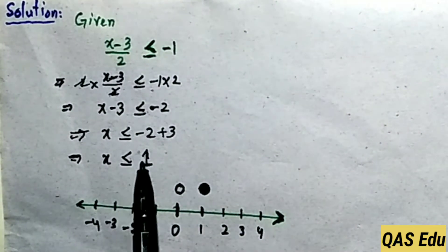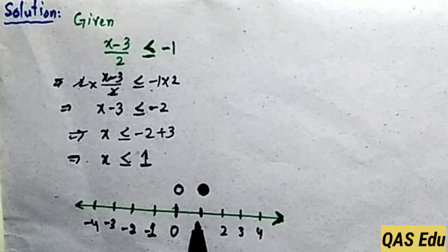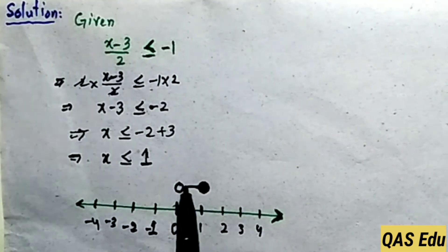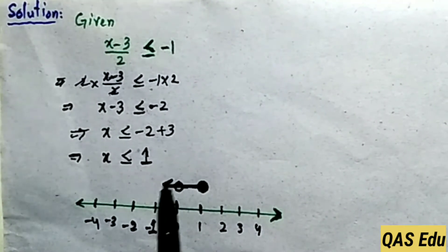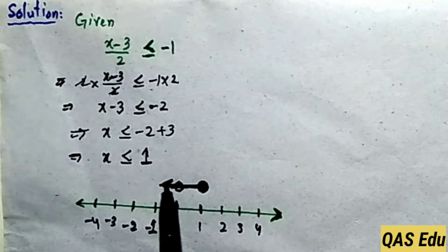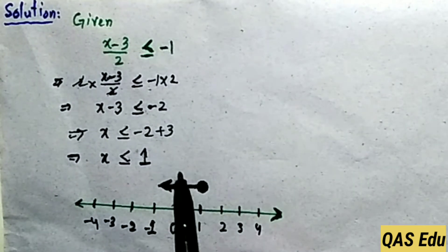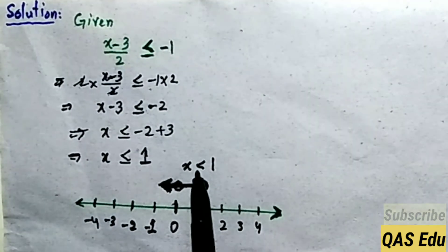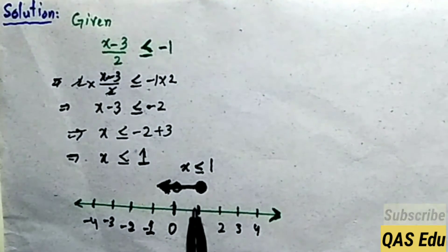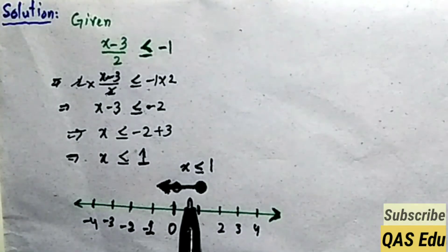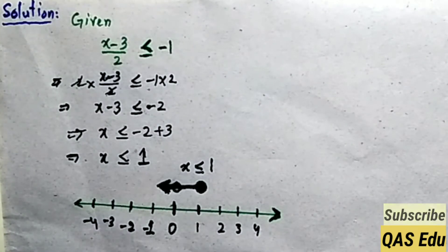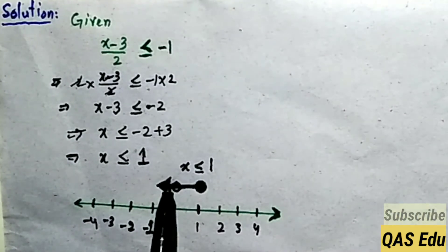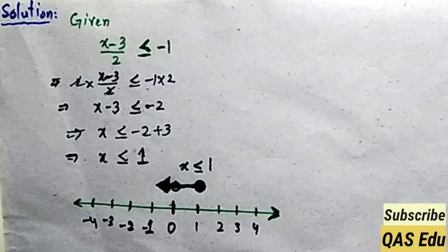x is less than 1, so values less than 1 go to the left: 0, minus 1, minus 2, minus 3 and so on. Draw an arrow in that direction. The notation is x is less than or equal to 1. Since equal to 1 is included, draw a filled circle at 1. If equal to were not included, draw an empty circle.